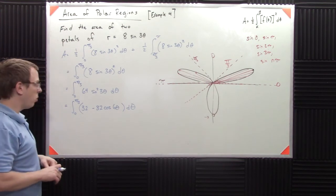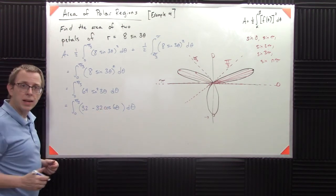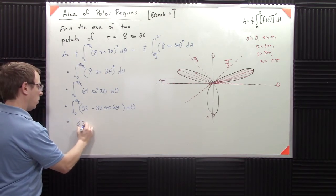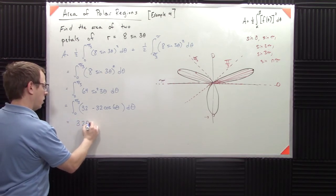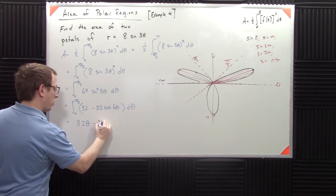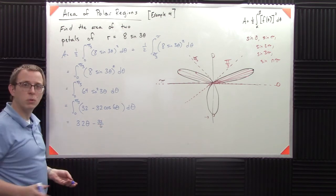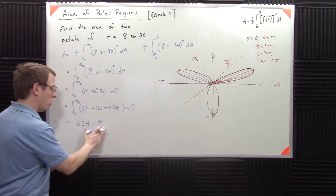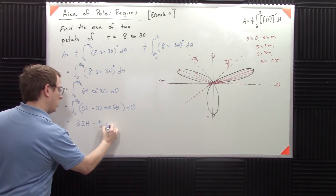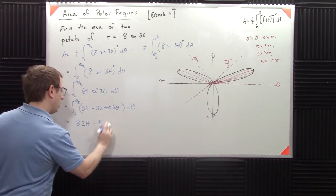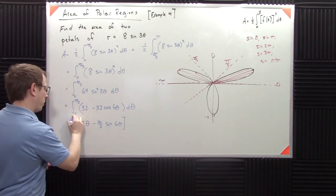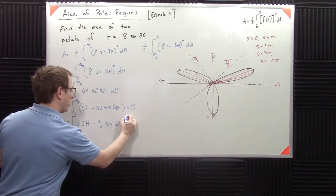At this point, we can take an antiderivative, we can get 32 theta minus 32 over six, which by the way, 32 over six is 16 thirds, 16 thirds sine of six theta from zero to pi over three.